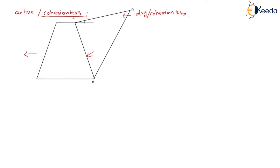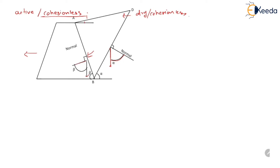Now let us discuss the different angles. The angle made by the failure wedge BD with the horizontal is alpha. If we draw a normal to the failure wedge, this normal will make angle alpha with the vertical. Similarly, the back of the retaining wall is inclined at an angle beta with the horizontal, so if we draw a normal to the back of the retaining wall, it will be inclined at angle beta with the vertical.